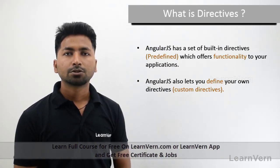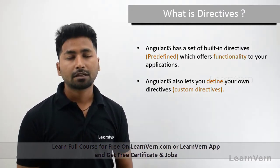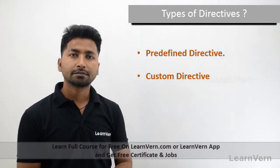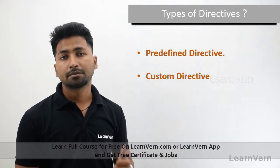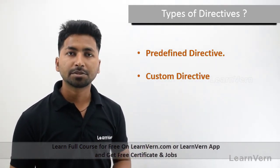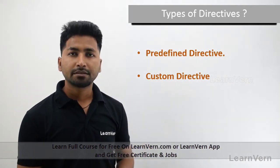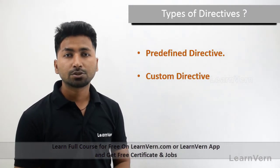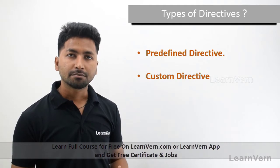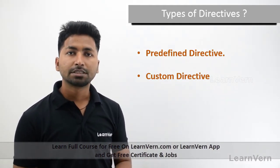In AngularJS, when you want to use directives, you have to write some code in your HTML file. There are basically two kinds of directives: first is predefined, which is provided by AngularJS itself, and another is custom directive. Predefined directives are already made inside the AngularJS framework — we just need to use them. Custom directives are defined by us, meaning we create the directive and add functionality to it.